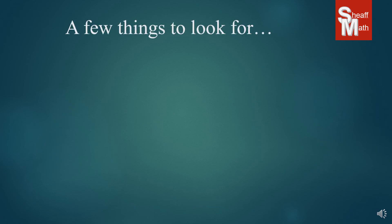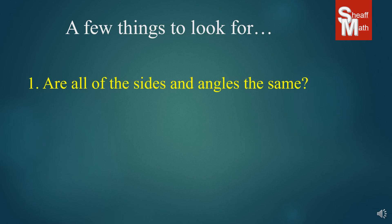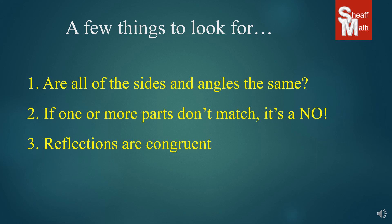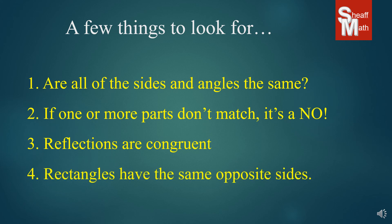Before we go, a few things I want you to look for: Are all of the sides and angles the same? That's a question you want to ask yourself — that's what makes congruent shapes congruent. Now, if one or more of those parts don't match — any of them, angles or sides — it's an absolute no, they are not congruent. Always remember that reflections are congruent; it might confuse you sometimes because they're not going in the same direction, but if they have the same corresponding parts congruent, then they are. And don't forget about rectangles — sometimes you don't have all the information, but knowing that rectangles have opposite same sides will give you a clue that you have congruent shapes.